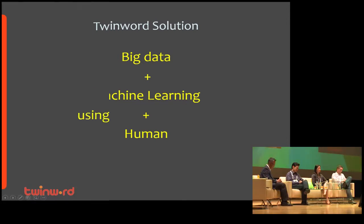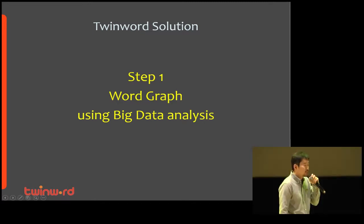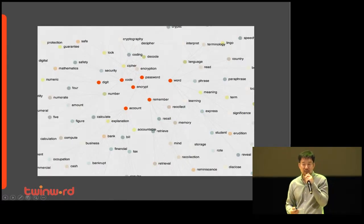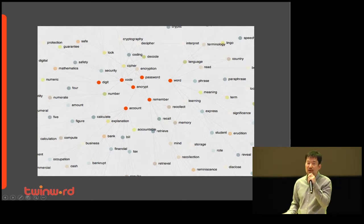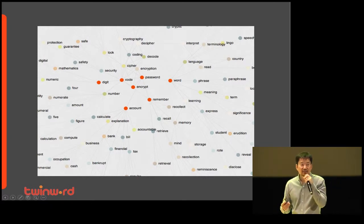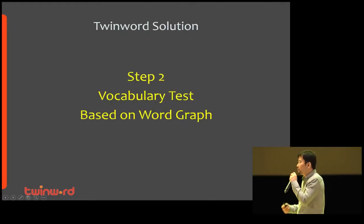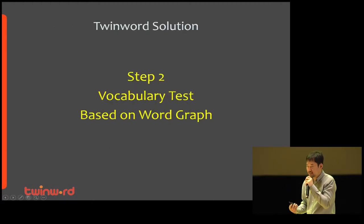As a first step, Twinord built word graph using big data analysis. We analyze four terabytes of big data using natural language processing to make this word graph. All words are related with others. As a second step, we built vocabulary tests based on this word graph.